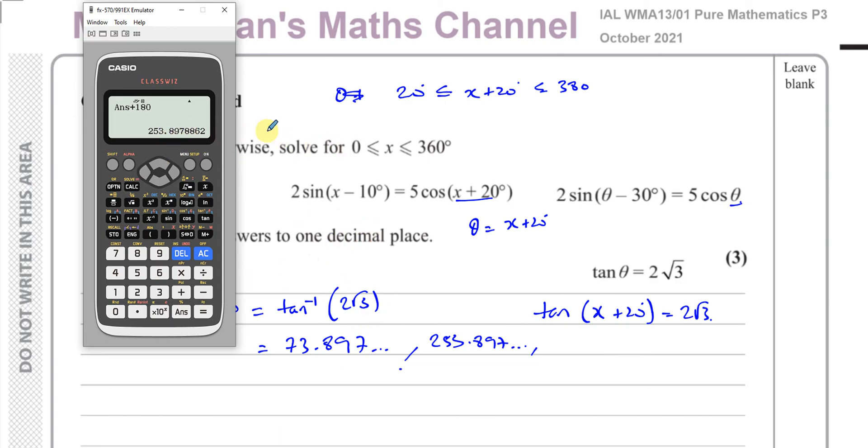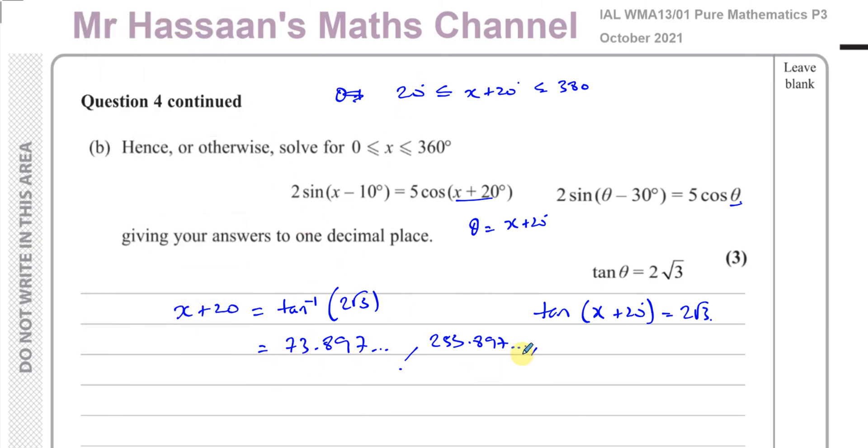That will give us the other angle which shares the same tan ratio, which is 253.897 continuing. Now the next angle is another 180 away from this. Of course it's going to be outside of the range, it's going to be more than 380. And if I take away 180 from this, of course it'll be less than 20. So we have basically found all the angles.